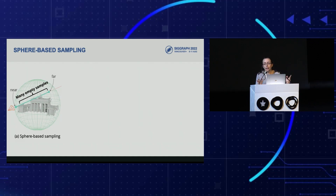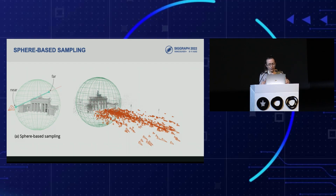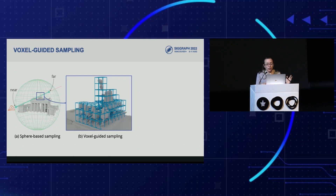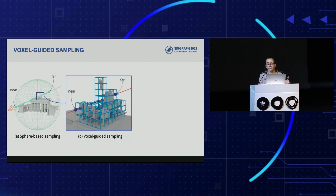To remove unnecessary coarse samples and speed up training, we leverage structure-from-motion to estimate camera poses, and also use its sparse point cloud as a rough surface estimate. At the start of training, we generate a sparse voxel that encloses the sparse SfM point cloud. The sampling range of a given ray is then reduced to the intersection between the ray and the sparse voxel. We call this technique voxel-guided sampling.